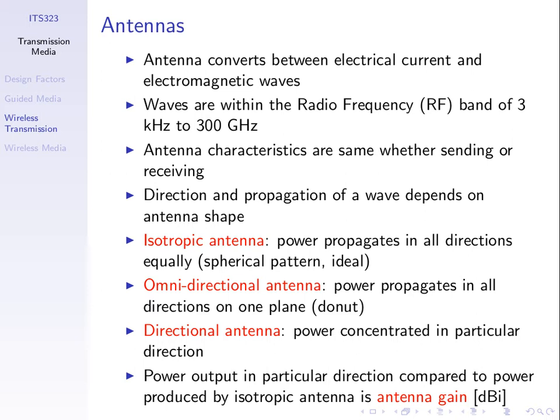An ideal antenna is an isotropic antenna. If we transmit our signal out of an isotropic antenna, it disperses equally in all directions. We start with a power level that we transmit, and that power — the energy — disperses in all directions.